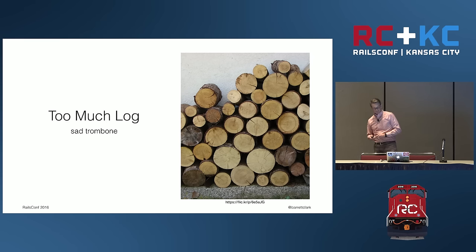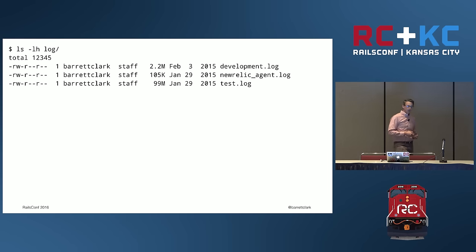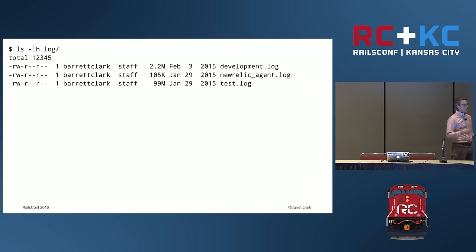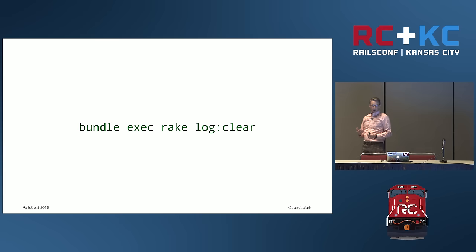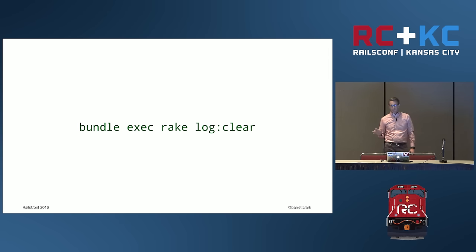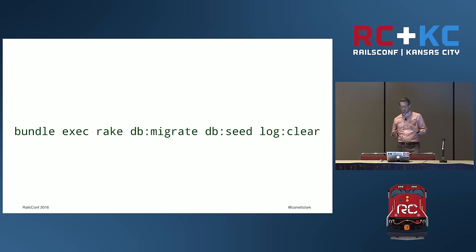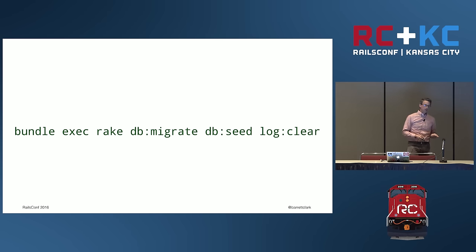If we have too much log, we've got a rake task for that in Rails. Take a look at your logs directory — you can see that the test log is significantly bigger than the development log. You're running your tests a lot, maybe with a guard running, so every time you save it reruns your tests and the log can quickly grow. `bundle exec rake log:clear` will go through and truncate each file in that log directory. It won't give you any output. So why not rake all the things — `bundle exec rake db:migrate db:seed log:clear` — and make sure the database is up to date and logs are clear every time?